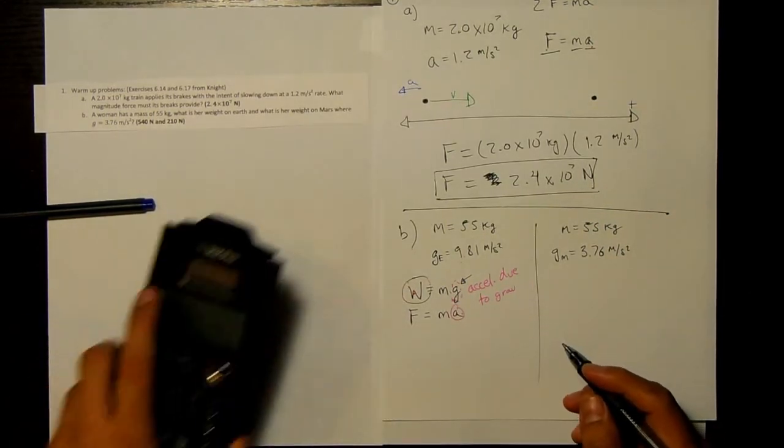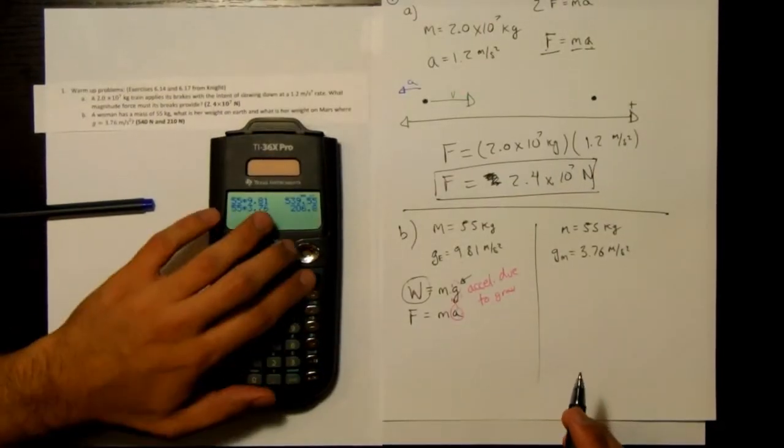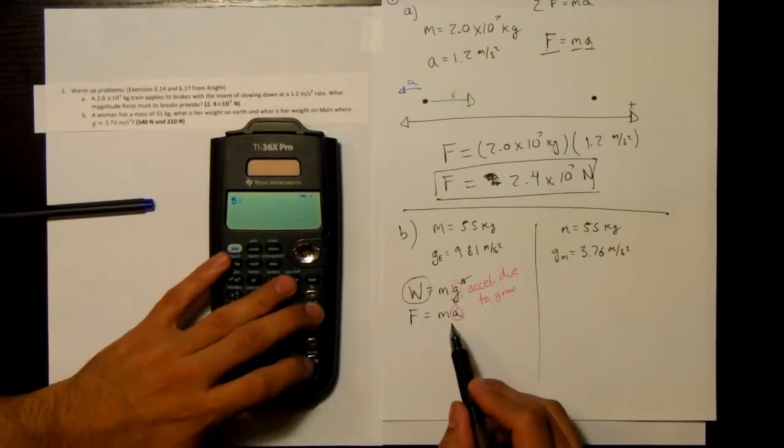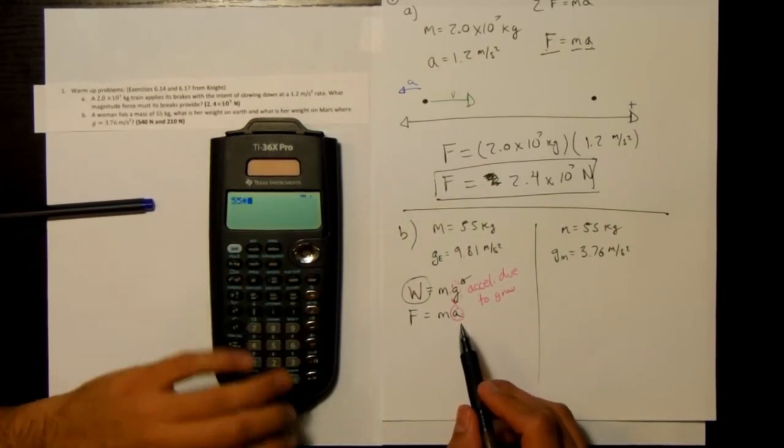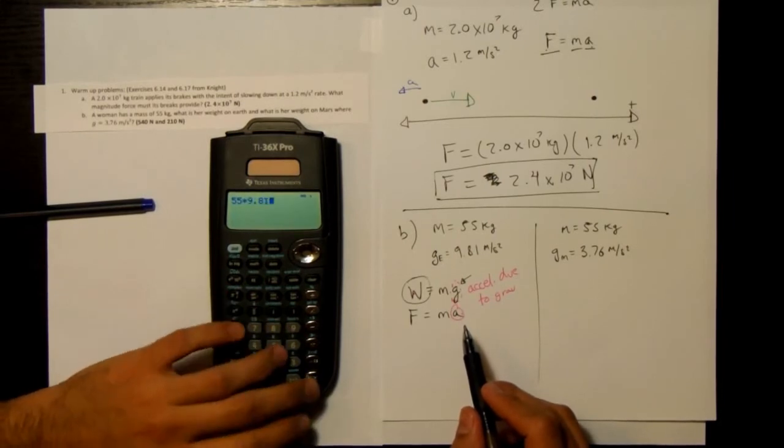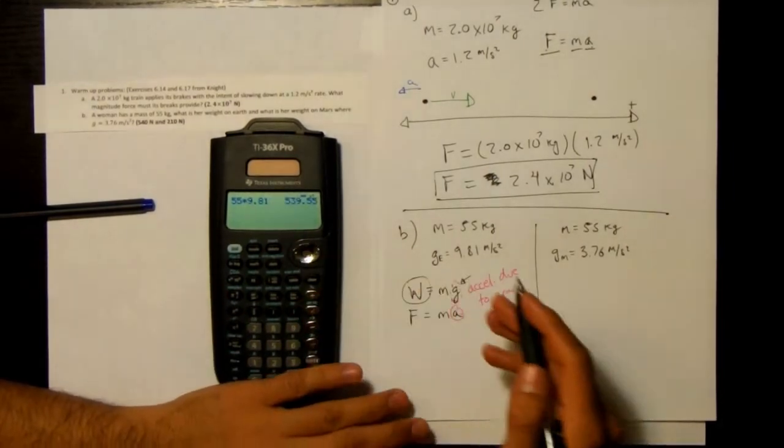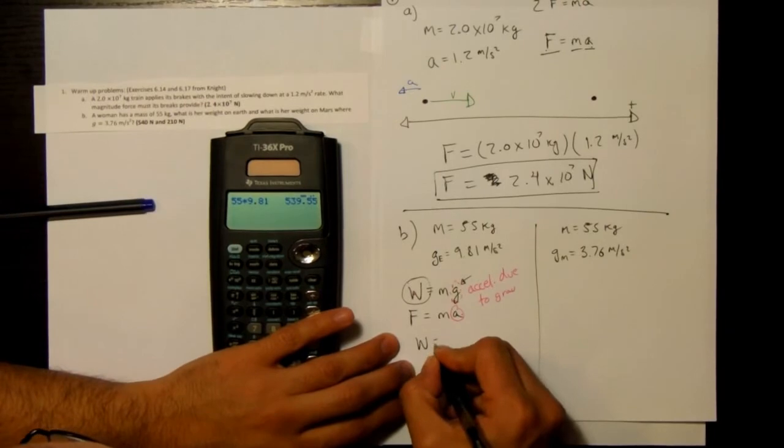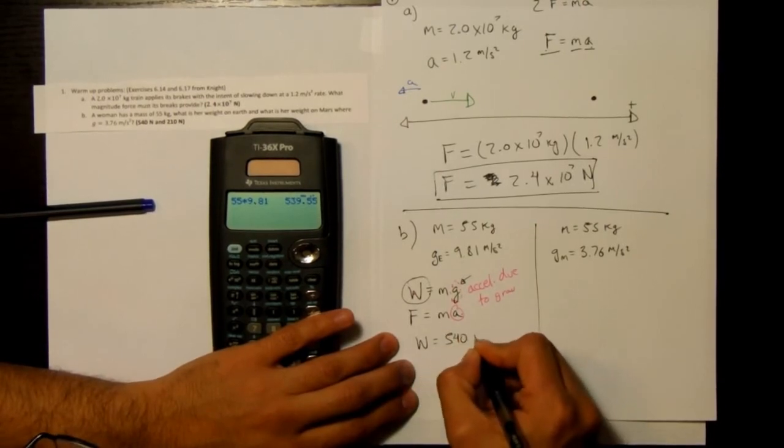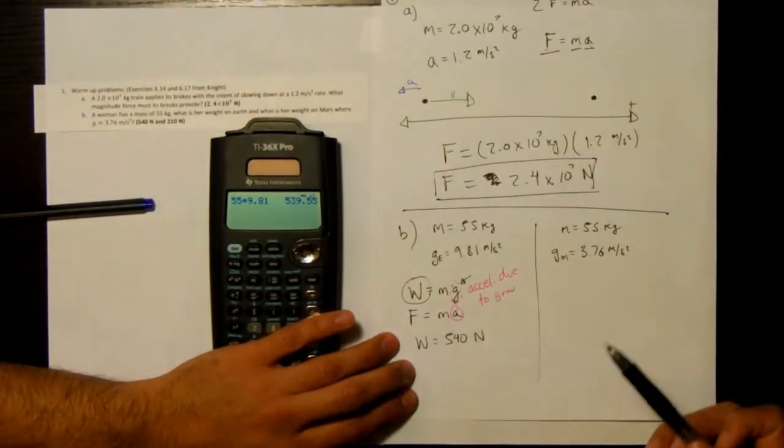And if we do that for Earth, I just write 55 times 9.81. I get 539, so I'll round that to 540 newtons. That's what we have for the answer.